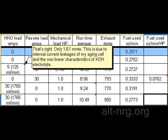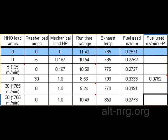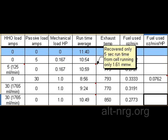It was only 1.61 mmW, and this is due to the internal current leakages of my aging cell and the non-linear characteristics of potassium hydroxide electrolyte when you apply an electrical current to it. So this is the real figure, and when we ran that, we got back only about 5 seconds of run time. But it was measurable and very consistent.